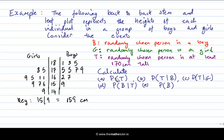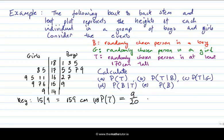First, P(T): the probability that a person has height at least 170 centimeters. We count the data points in the rows corresponding to 170 and 180 — that gives us one, two, three, four, five, six, seven, eight, nine. The total number is 20, so P(T) = nine over twenty.